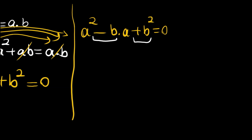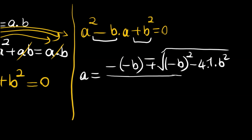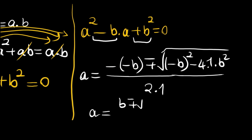By the quadratic formula, a is equal to b plus or minus the square root of b squared minus 4 times 1 times b squared, all divided by 2 times 1. Under the square root we have b squared minus 4b squared, giving negative 3b squared, all divided by 2.